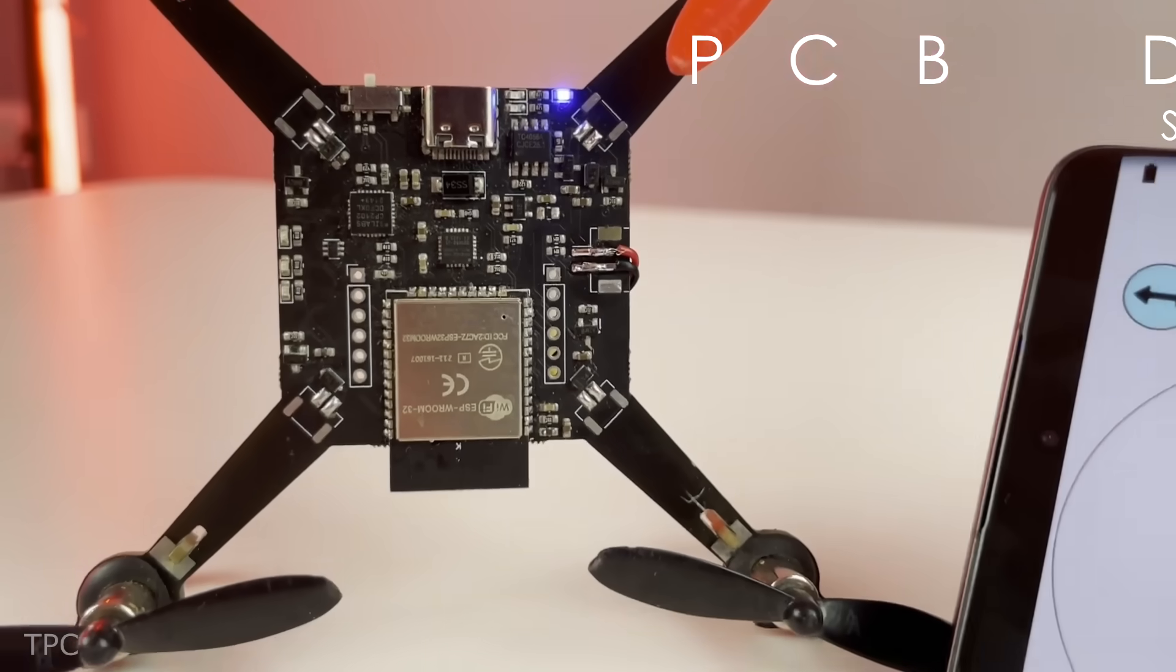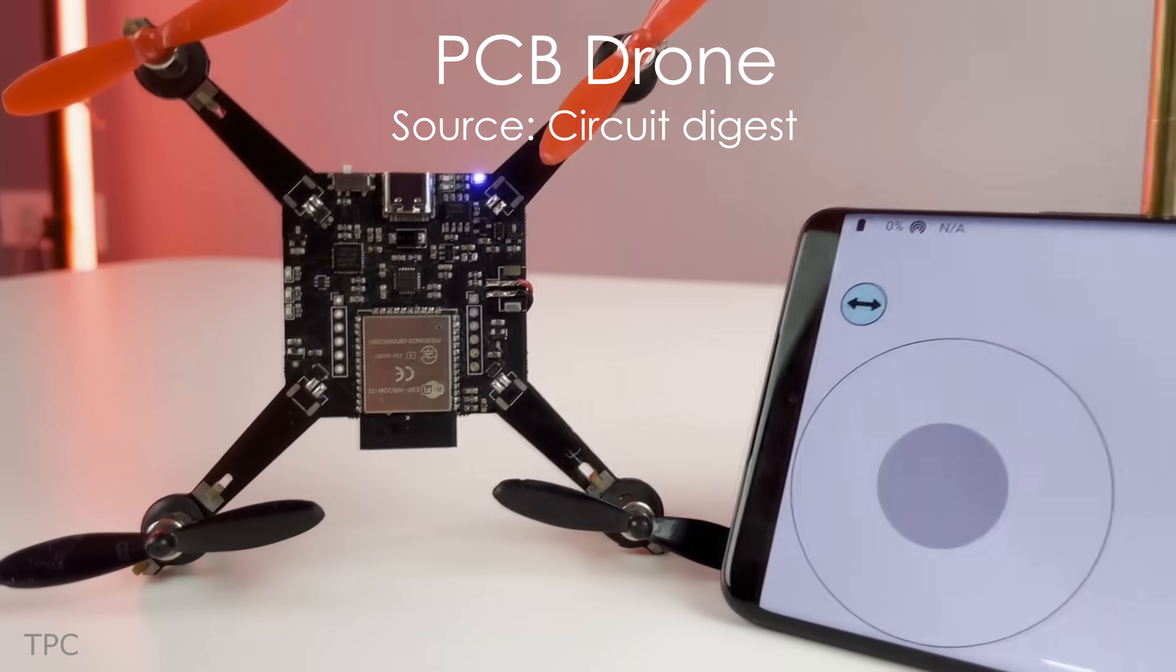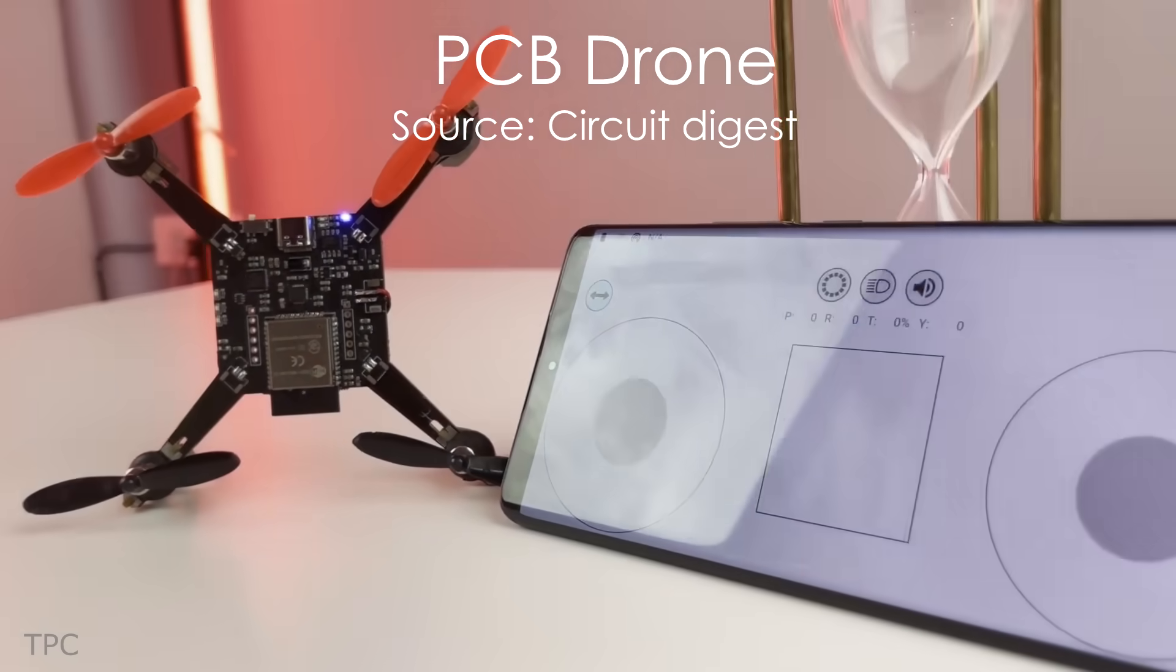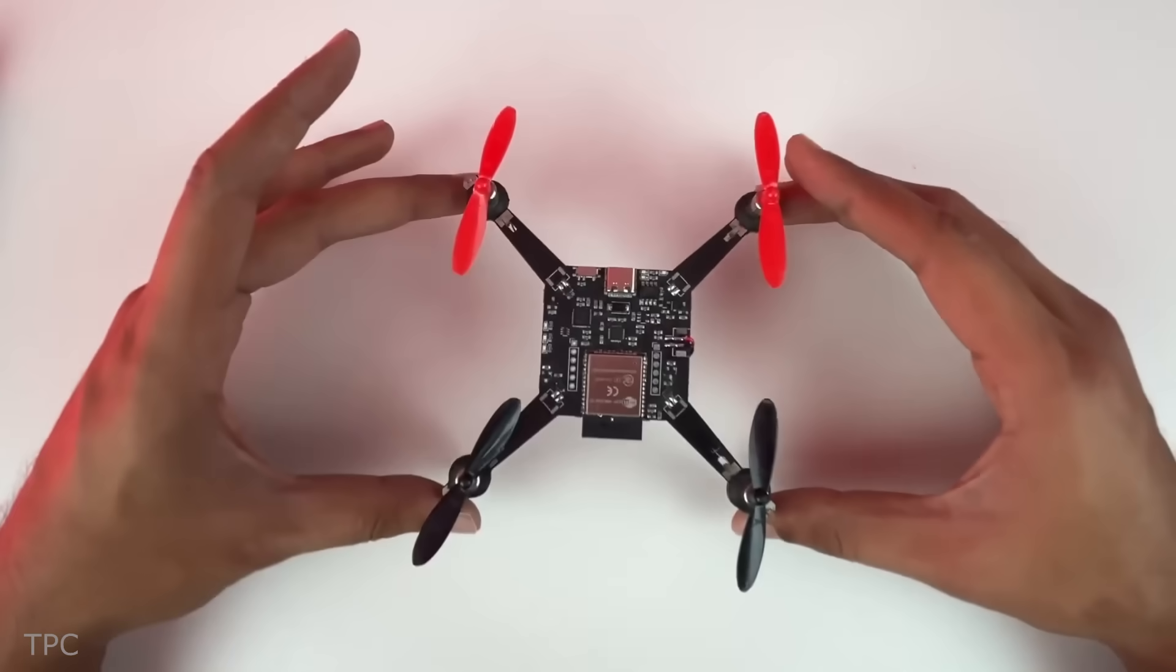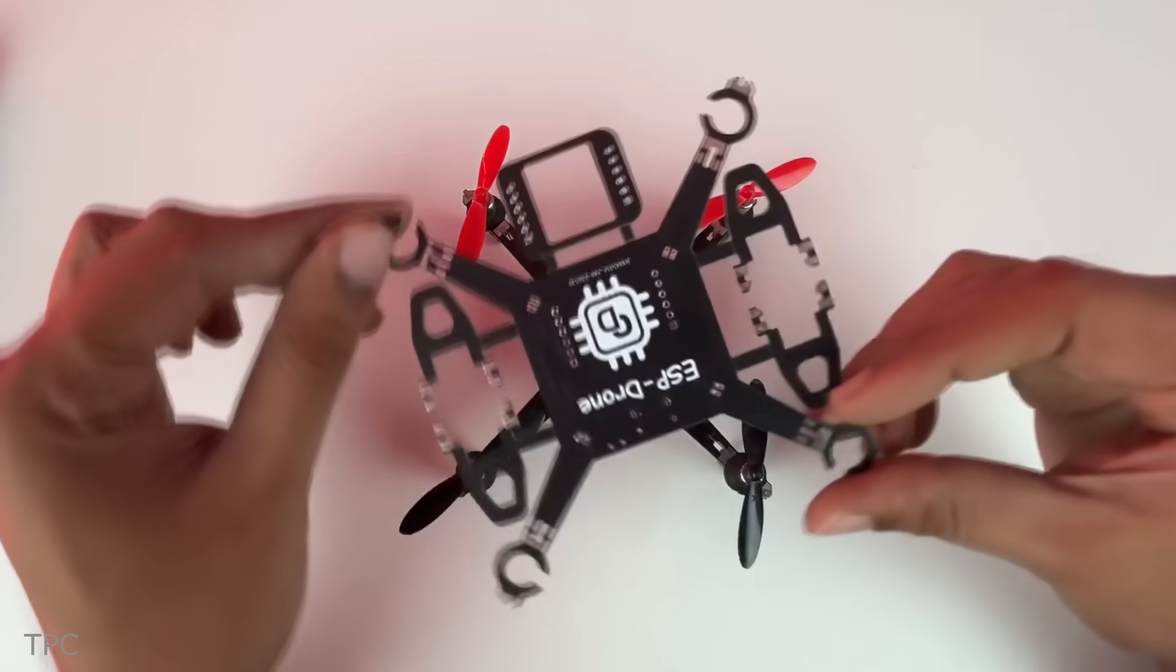Likewise, the door sensor node incorporates a magnetic reed switch, and the weather node features a BME-680 sensor. The collected data from these nodes is transmitted to the gateway and can be conveniently viewed on a dashboard. Number 16. The Circuit Digest team set out to build a low-cost drone, managing to do it at just one-sixth the price of a typical DIY drone.